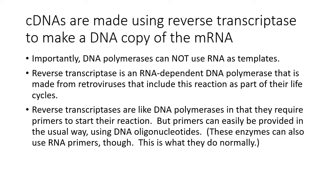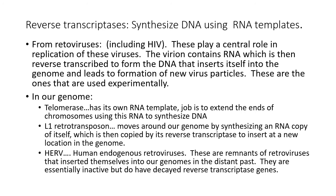We also need nucleotides, and those can easily be provided. Reverse transcriptases synthesize DNA using RNA as templates. Retroviruses like HIV include these as a critical part of their life cycle. In those viruses, the virion contains a genomic RNA which needs to be reverse transcribed to form DNA as part of the life cycle in which the virus will then produce new virus particles to replicate itself. These are the reverse transcriptases that we normally use experimentally.